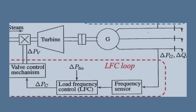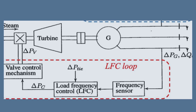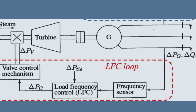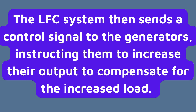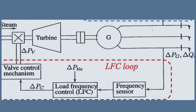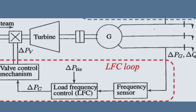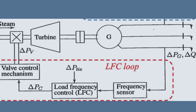Now, let's break down how LFC works. When there's a load change in the system — say, a large industrial plant turns on — a few things happen. First, this increase in load causes the system frequency to drop. Sensors detect this frequency change and send the information to the LFC system. The LFC system then sends a control signal to the generators, instructing them to increase their output to compensate for the increased load. This feedback loop continues, constantly adjusting the generator output to keep the frequency stable.